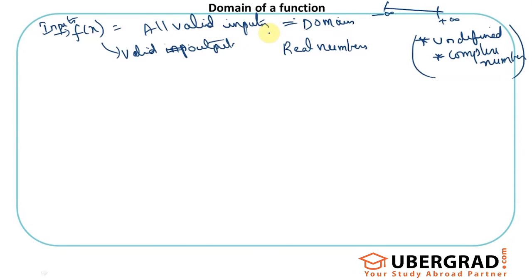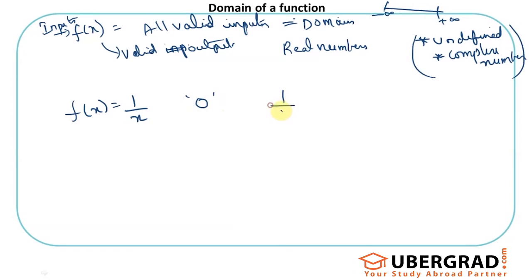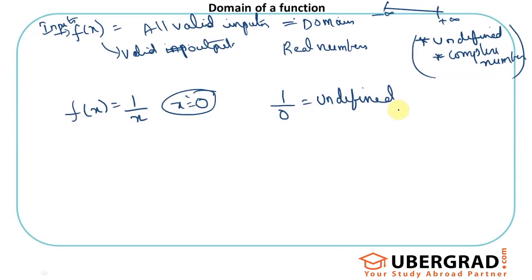Let's take a function like f(x) = 1/x. What are all the possible values? I can give everything in the real number system except 0. What's wrong with 0? If I take x as 0, I get 1/0 — we sometimes say that's infinite, but it's actually undefined. So 1/x when x is 0 gives 1/0, which is undefined, so the output is not valid.